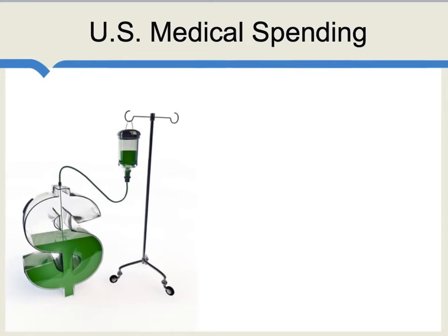Okay, let's use our Rule of 70 for one more neat little trick. Between 1970 and 2008, per capita medical spending in the United States grew at a rate of about 4% per year. Now, remember, U.S. GDP per capita is growing at a rate of 2% per year. So medical spending is growing at twice the rate of per capita GDP — in other words, medical spending is growing faster than GDP by 2% per year. This means that as a share of U.S. GDP, medical spending will double in approximately 35 years — 70 over 2.